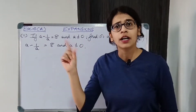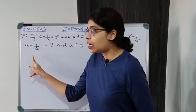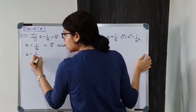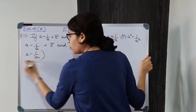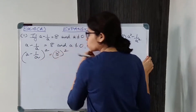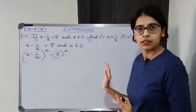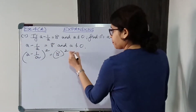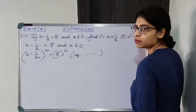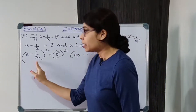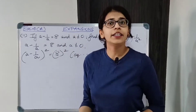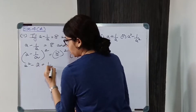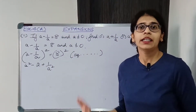If A is 0, the expression is undefined. Now, A minus 1 upon A is equal to 8. We will square on both the sides — squaring on both the sides. So A minus 1 upon A, the whole square equals 8 squared. I have an identity for that: A square minus 2 plus 1 upon A square. You are supposed to know the identity; these are basic identities.